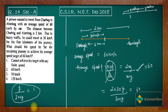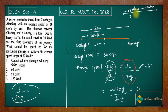So the key takeaway from this problem is that the formula for average speed over equal distances is 2xy / (x + y), where x and y are the respective speeds. The correct answer is option 1 — he cannot achieve his target with any finite speed. Options 2, 3, and 4 are incorrect. If you have any doubts, ask in the comment section or join our WhatsApp and Telegram groups — links are in the description. Thank you.